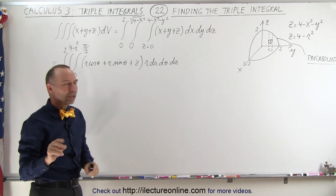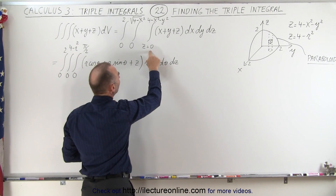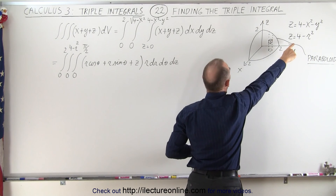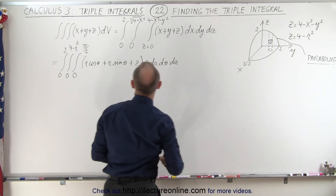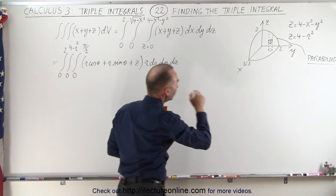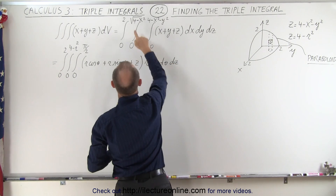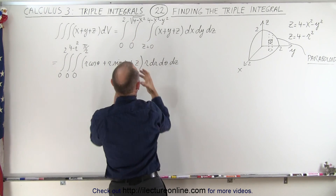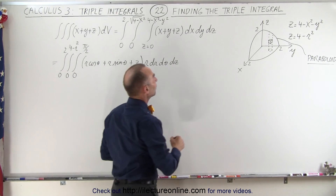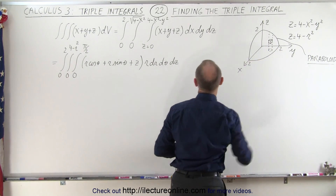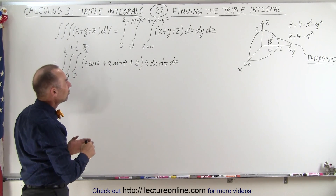Let's first explore the limits in Cartesian coordinates. You can see that z would go from zero to the boundary of the paraboloid, which is 4 minus x squared minus y squared. When we integrate over y, we'd go from zero to the square root of 4 minus x squared, because the boundary is circular in shape. Finally, we integrate in the x direction from zero to two.